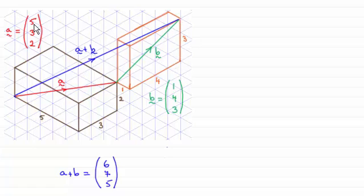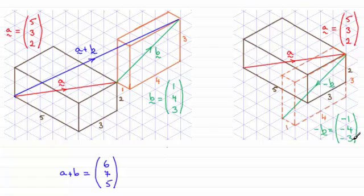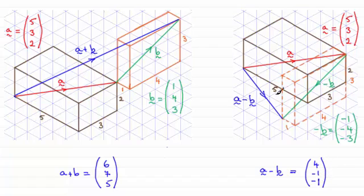And that gives us a plus b, just by adding the corresponding elements together. Similarly, when it comes to a minus b, we take vector a again and add the vector negative b. Negative b is (-1, -4, -3), just negating these values. When we do a followed by minus b, the result we get is (4, -1, -1). You can see that we go four across, one in this direction, and then one down — and it takes us to this point.